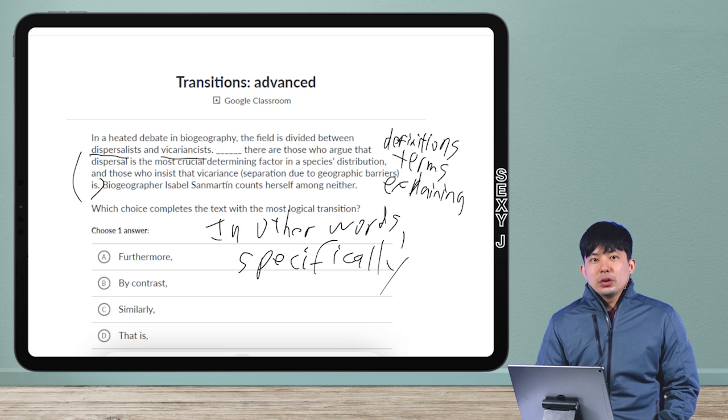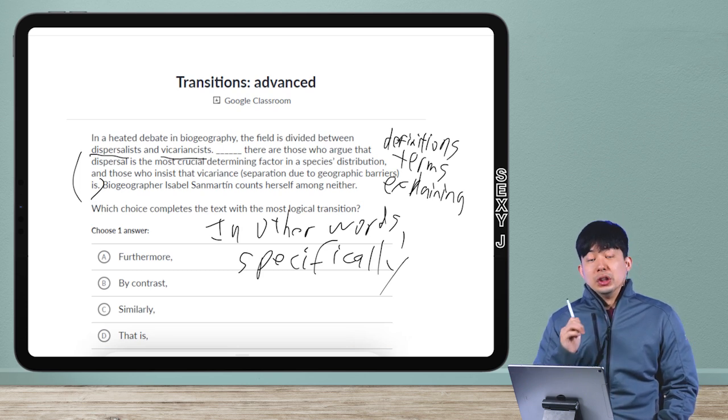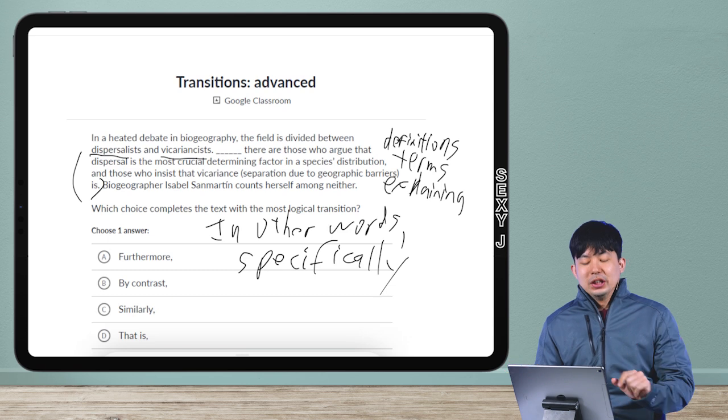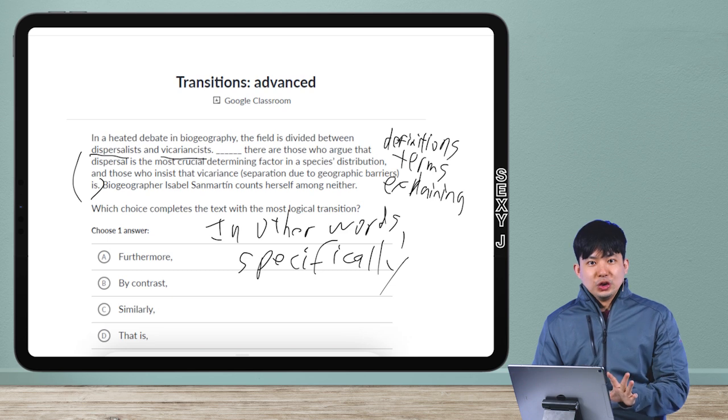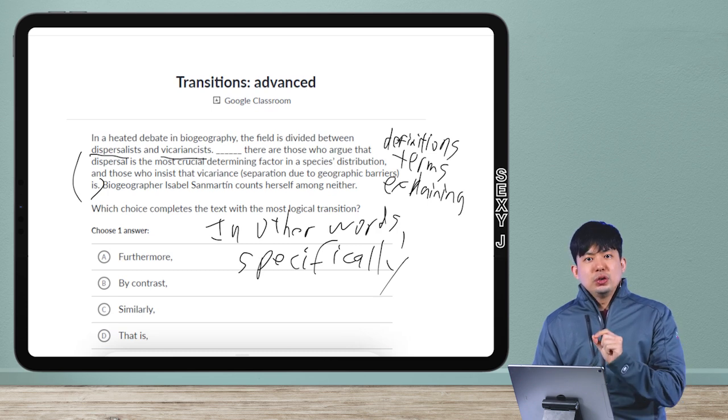What I want to do is—this is the one thing I should have told you guys many videos ago—do not, and I repeat, do not just plug in these words into the blank and go with the one that sounds best. That'll get you like 60% accuracy at best. That is the main flaw that people have. Same thing for the vocab—don't just plug them in. There has to be a bigger strategy than that.